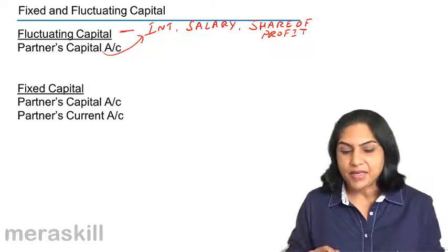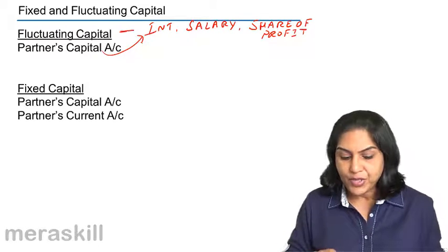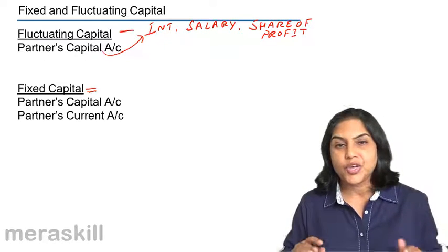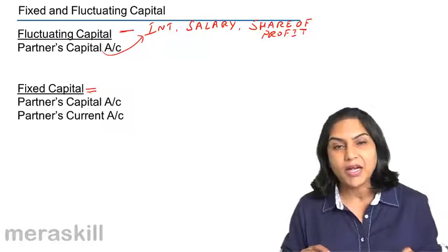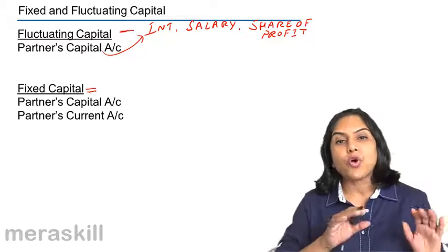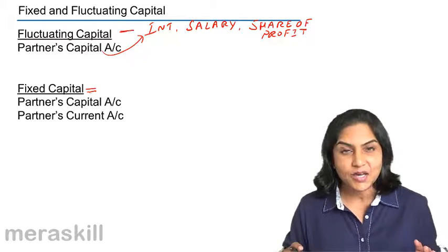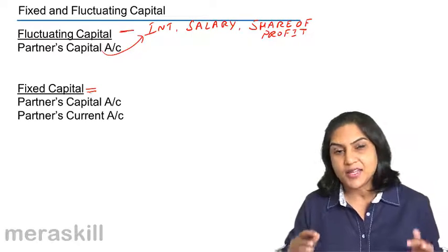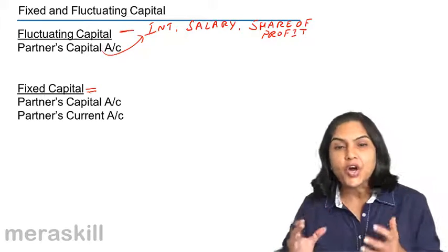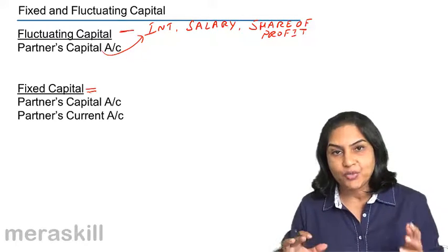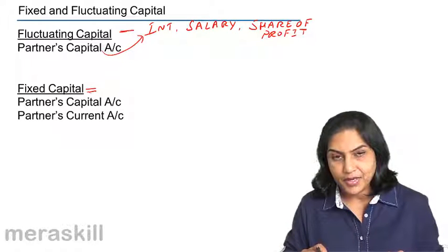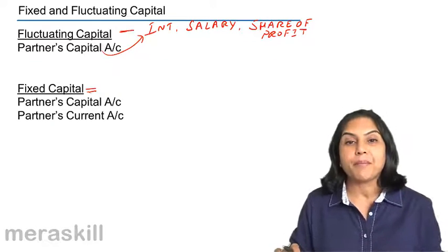There is another method by which the partner's capital account is kept fixed. So if A began with a capital account of 1 lakh and B began with 60,000, it would always remain 1 lakh and 60,000 unless they bring in additional capital or they withdraw a part of the capital. Otherwise, it would remain the same.